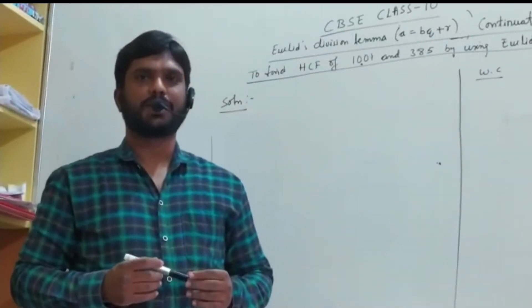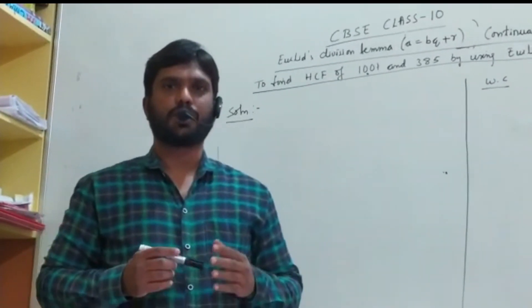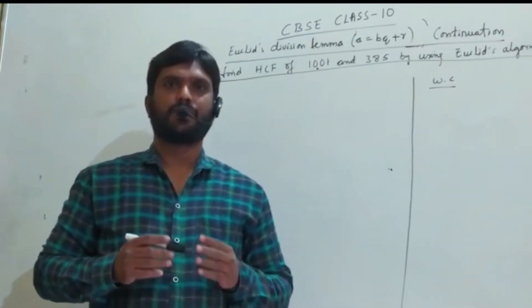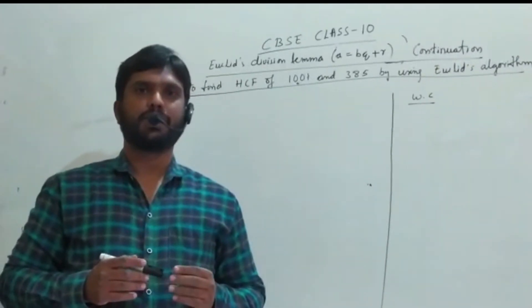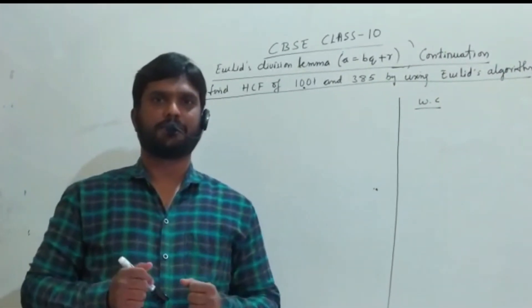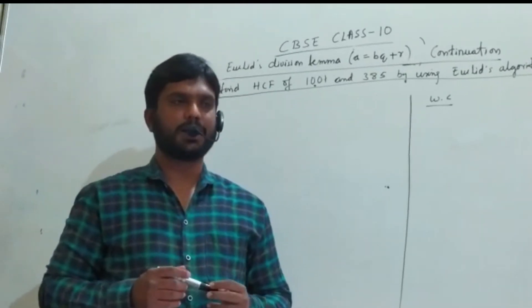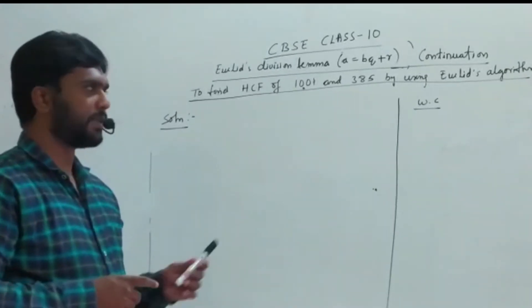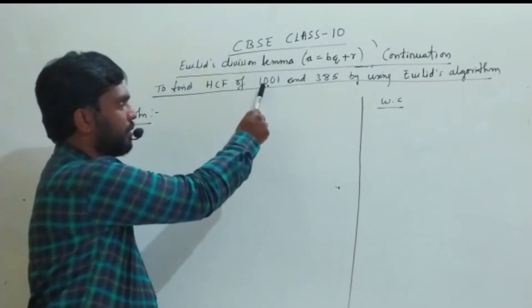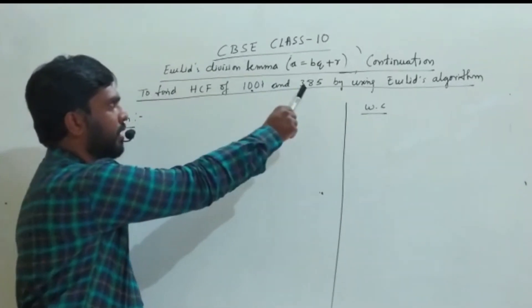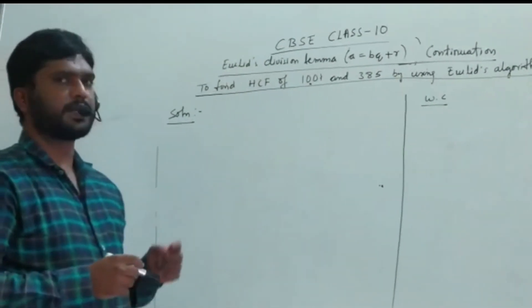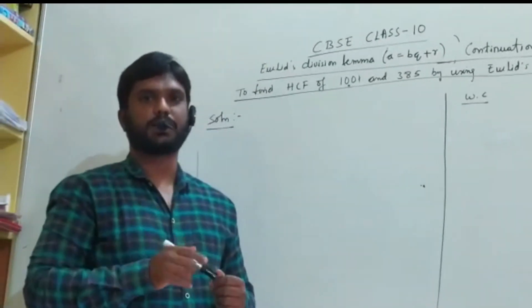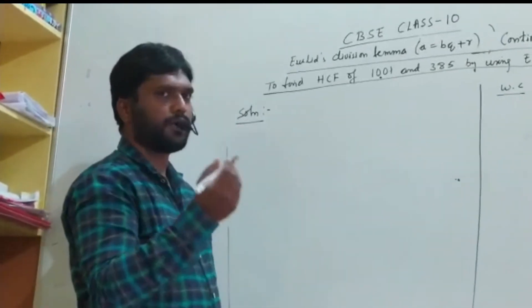Hi students. In the previous class you learned what Euclid's division lemma is. In this session, we will be learning how to find HCF using Euclid's division lemma. We will consider an example and take two numbers: 1001 and 385. We are finding HCF using Euclid's division lemma, also called Euclid's algorithm.